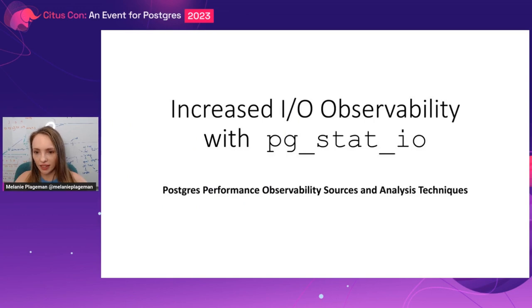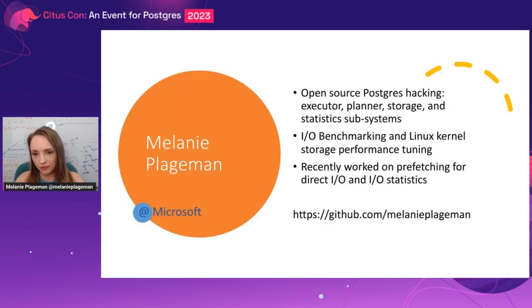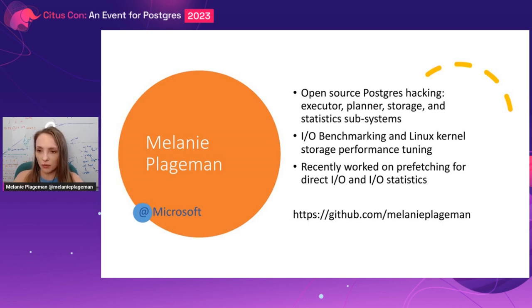This talk is going to be great for users that are already comfortable doing some amount of tuning and want to take it to the next level. I'm going to talk about the difference between the existing IO statistics available in Postgres and what PGStat.io can offer in terms of observability. I'm a Postgres hacker working at Microsoft on the open source Postgres team. The last two years I've been very focused on IO performance and IO benchmarking, but before that I've worked on many other subsystems in Postgres, like Planner and Executor.